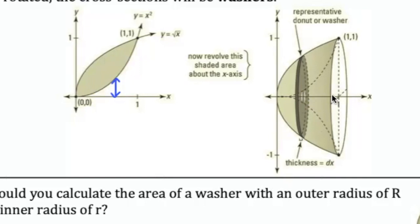So when this shaded area is rotated, we're creating washers, we're creating cross sections that have a hole in the middle, kind of like a donut. Let's take a look in Mathematica.